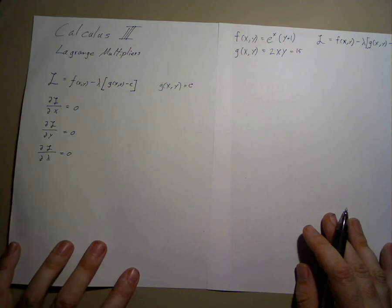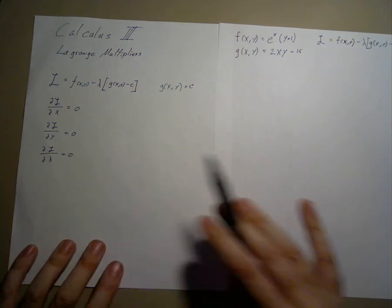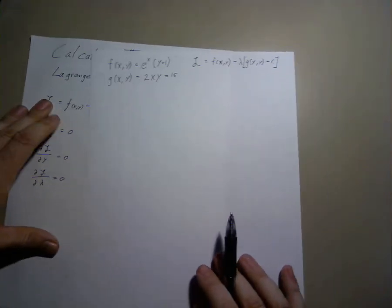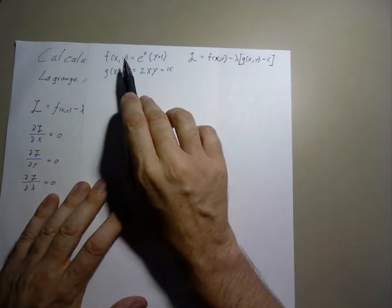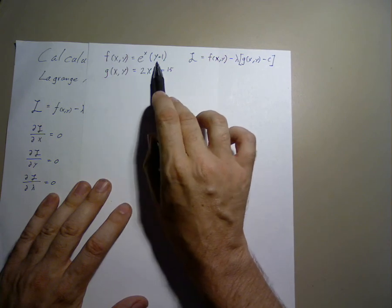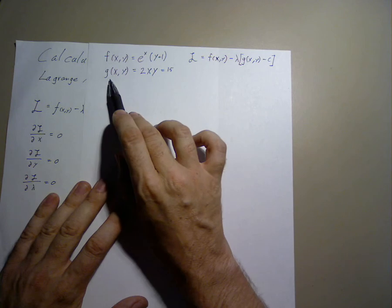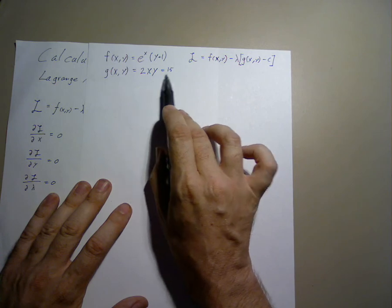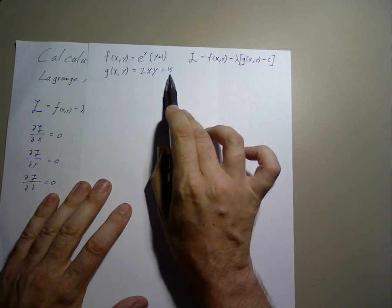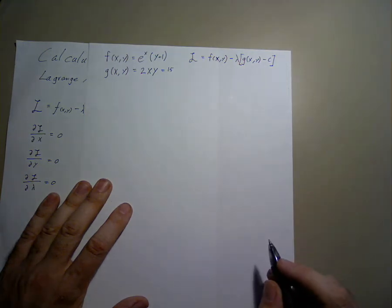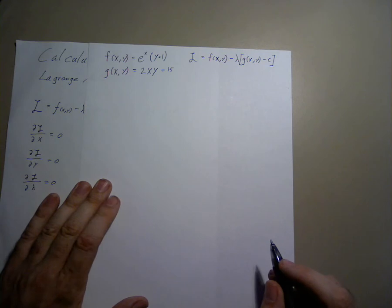So, in order to solve this, we start with the partial derivatives. In this example, we are going to start with f of x, y equals e to the xy plus 1 and with the constraint of g being 2xy equals 15. I chose this sample particularly because there was not an obvious easy solution to solve this with conventional methods.